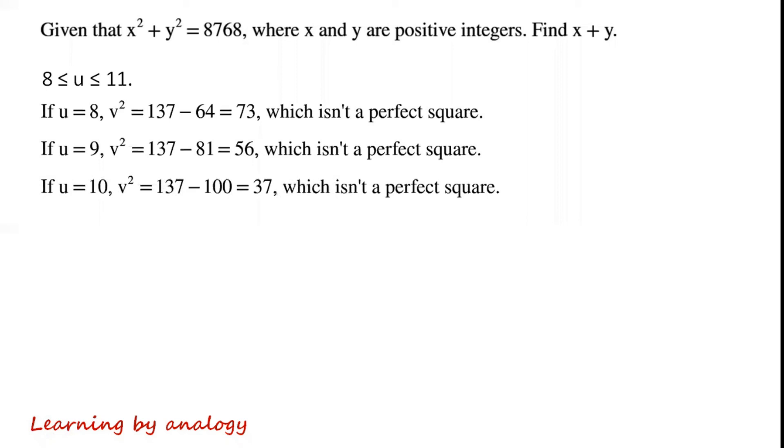If u equals 10, v squared equals 137 minus 100 equals 37, which isn't a perfect square. If u equals 11, v squared equals 137 minus 121 equals 16. So u equals 11, v equals 4.